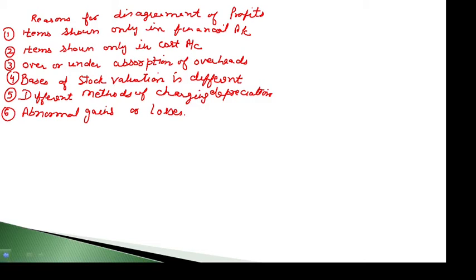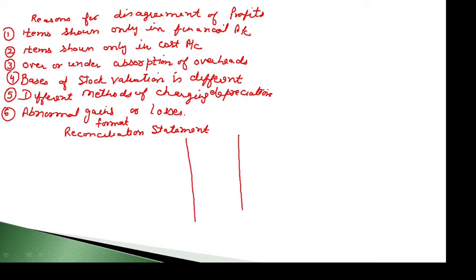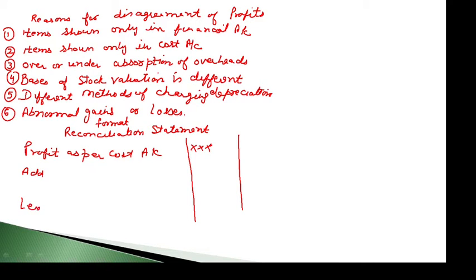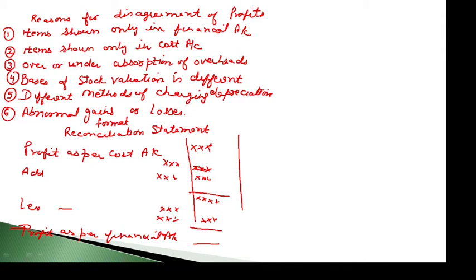Now we will solve a question. To solve it, you have to prepare a reconciliation statement format. We start with either profit as per cost accounts, profit as per financial accounts, loss as per cost accounts, or loss as per financial accounts. If we start with profit as per cost accounts, our answer at the end will be profit as per financial accounts. We will add some items and deduct some items, total them, and arrive at the final answer.